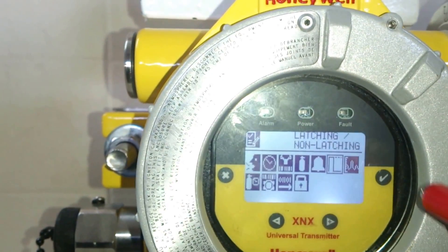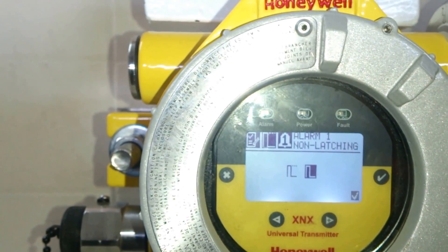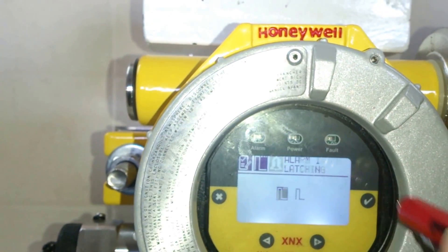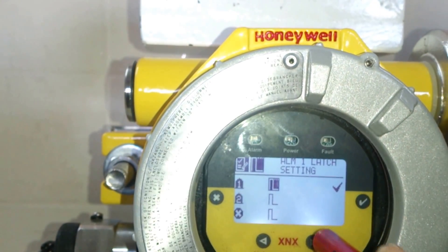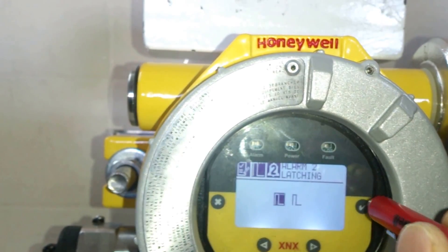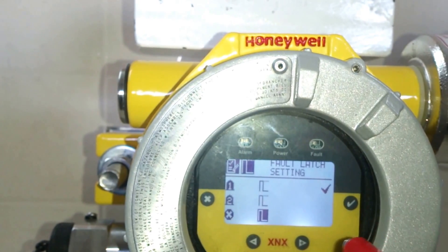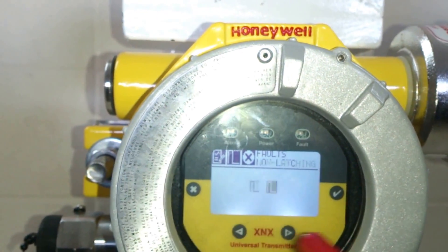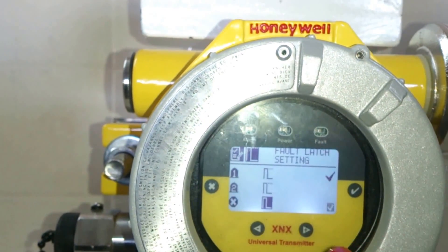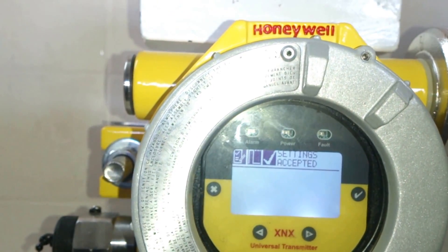Next we move to latching or non-latching. Here we have three options. First is alarm 1. Alarm 1 is set to latching. Select it. We move on to alarm 2. Alarm 2 once again is set to latching. Then we move to alarm 3. Alarm 3 is set to non-latching. Once saved, the settings are accepted.